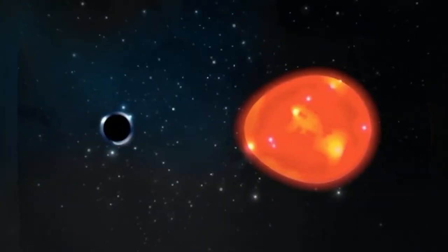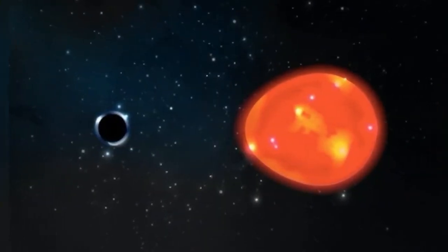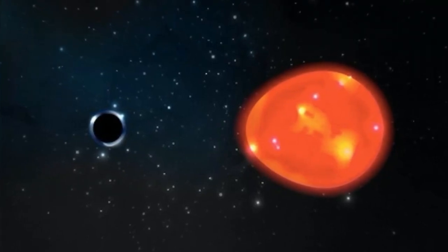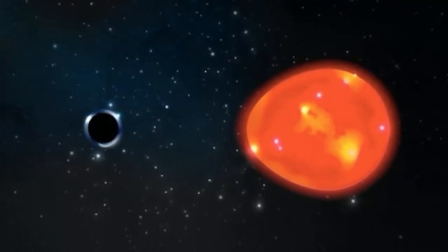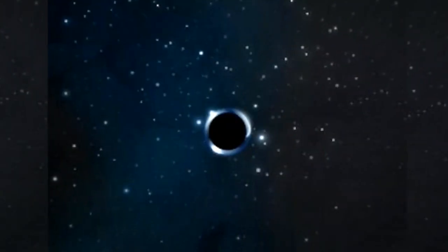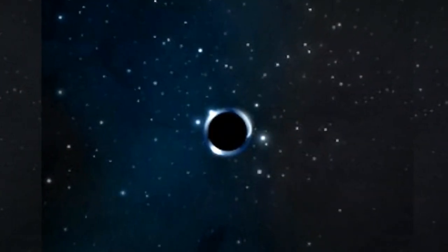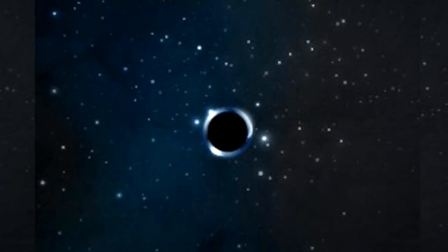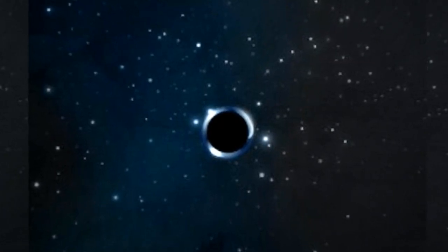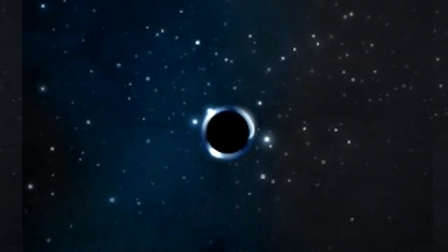The closest black hole to Earth is dubbed the Unicorn and is situated approximately 1,500 light years away. The nickname has a double meaning. Not only does the black hole candidate reside in the constellation Monoceros, its incredibly low mass, about three times that of the sun, makes it nearly one of a kind.